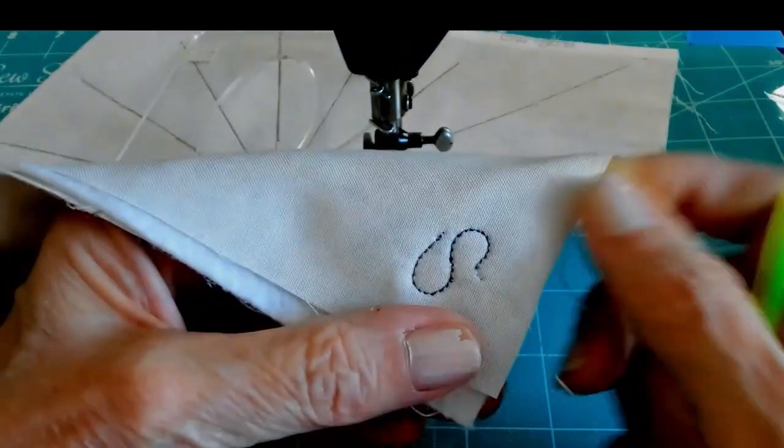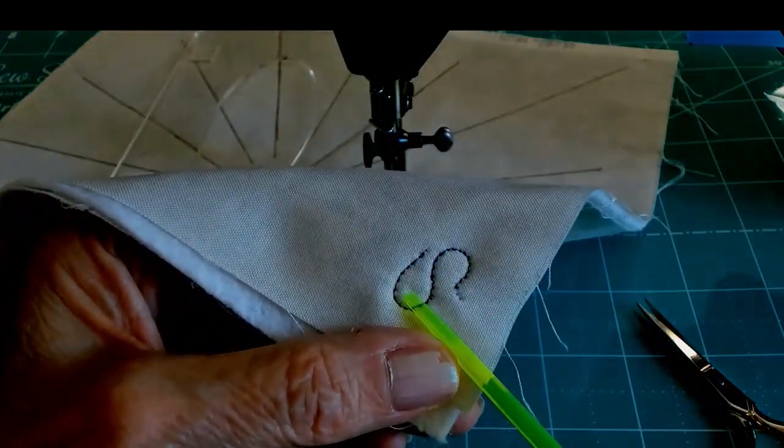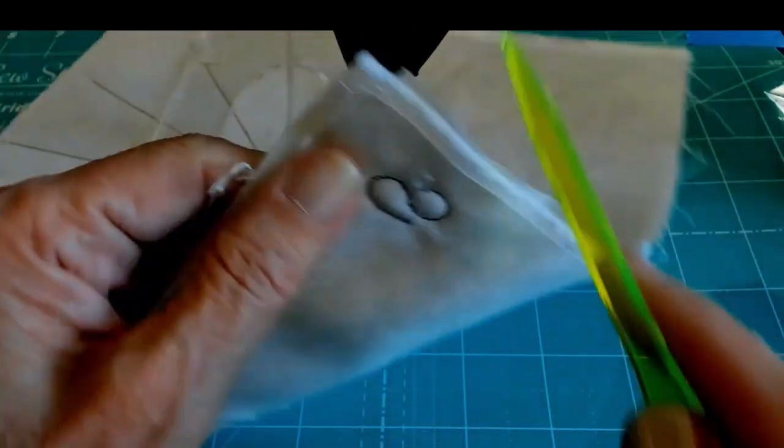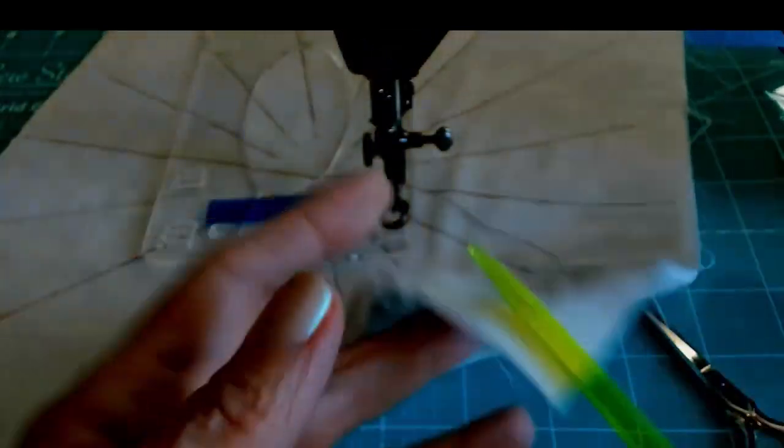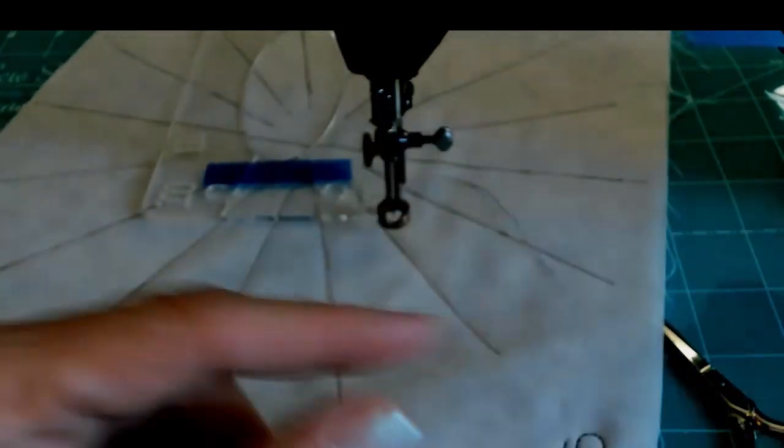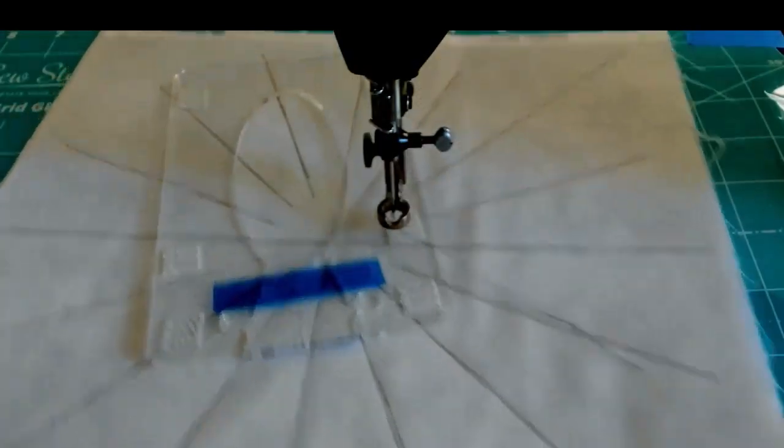And my bobbin thread is not coming up on the top. And as you can see here, this looks pretty good. I'm not seeing any bobbin thread here. And on this side, I'm not seeing any top thread here, and I'm not seeing any bobbin thread on the top. So, we are good to go.